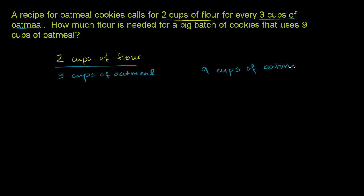I'll show you a couple of different ways to think about it — whatever works for you, that works. So first of all, one way to think about it: we know if we have three cups of oatmeal, we should use two cups of flour. But what we don't know is if we have nine cups of oatmeal, how many cups of flour do we use?